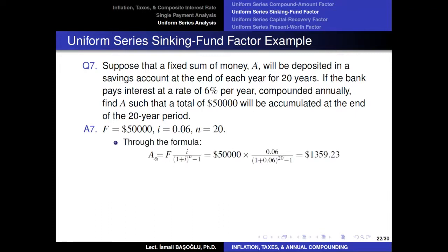Using the formulation, the annual installment size equals the future value multiplied by the uniform series sinking fund factor. Plugging in the values — F is $50,000, the annual interest rate is 0.06, and the number of investment years is 20 — that gives $1,359.23. So if you invest $1,359.23 at the end of each year for 20 years, with interest compounded at 6% per year, you will accumulate $50,000 at the end of the 20-year period.